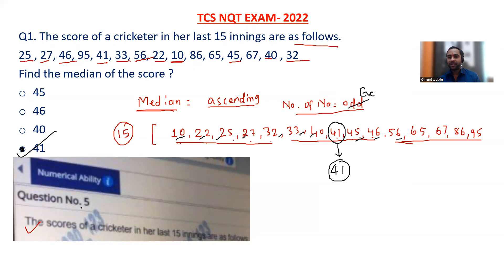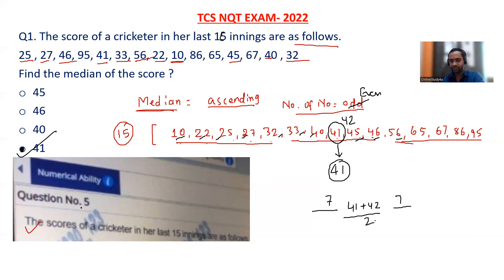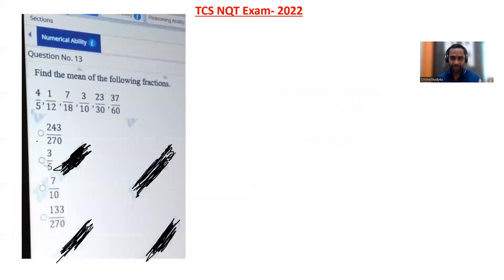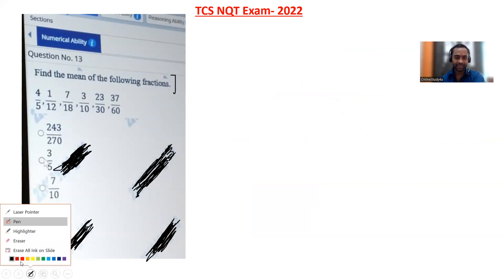In cases where the number of values is even — say 16 innings — you take the 8th and 9th numbers and divide by 2. For example, 41 plus 42 divided by 2. But when you have 15, 13, 11, or 9 values, the problem is very easy. Just arrange in ascending order and you will get the median. Now: find the mean of the following fractions — statistics is a very important topic.